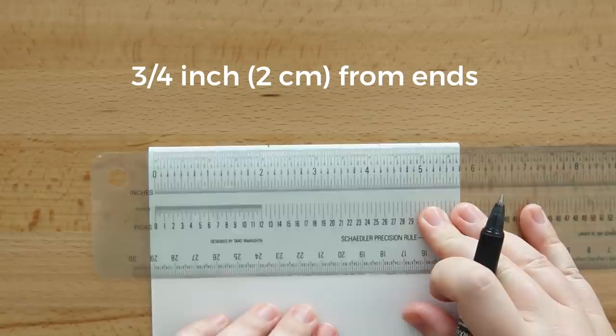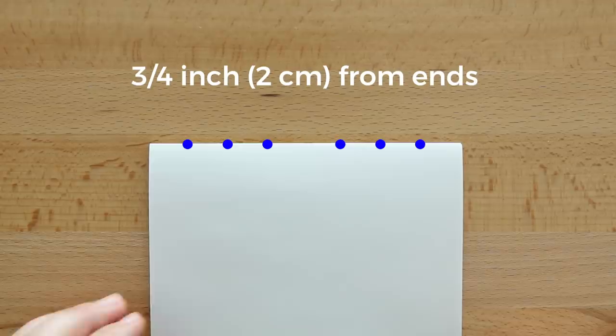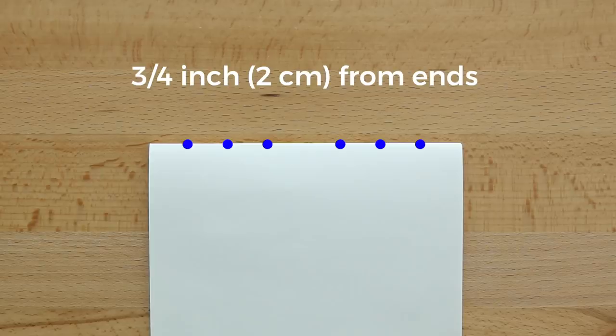To make the binding holes, I used one signature as a template and measured out three marks on each end. Each of them were three-fourths inch apart, leaving a nice space in the middle that was enough space for a French link stitch. Feel free to add more binding holes or change the spacing depending on the size of your book.